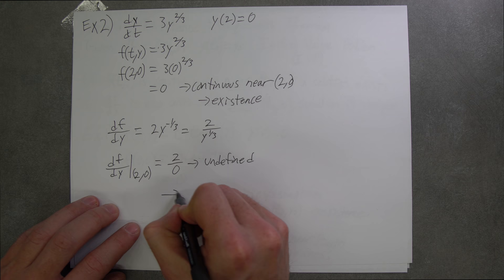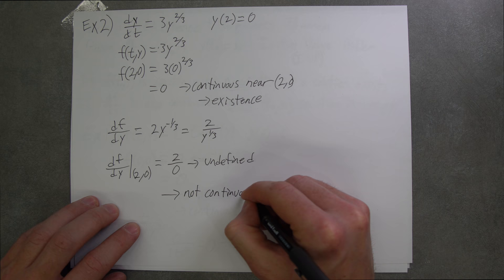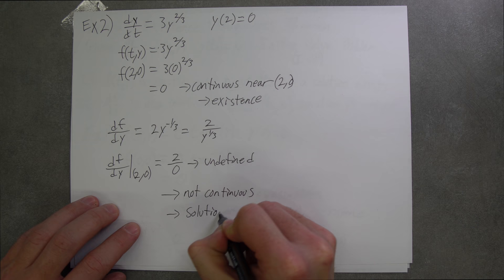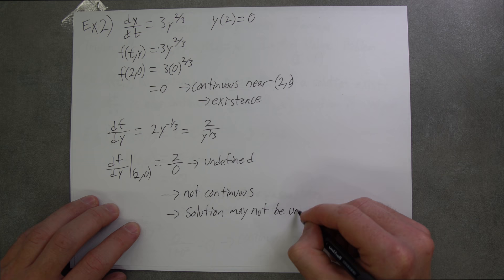So since it's undefined at this point, we can say it's not continuous, which means that our solution may not be unique.